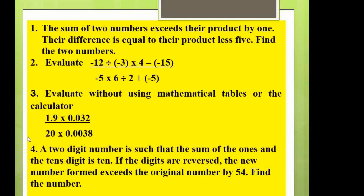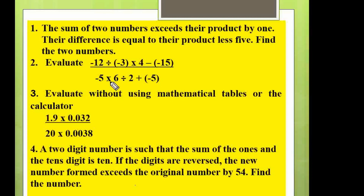Question number one reads: the sum of two numbers exceeds their product by one; their difference is equal to their product less five — find the two numbers. Question number two: evaluate negative 12 divided by, in bracket, negative 3 times 4, minus in bracket negative 15, close the bracket, everything divided by negative 5 times 6 divided by 2, plus bracket negative 5 close the bracket.